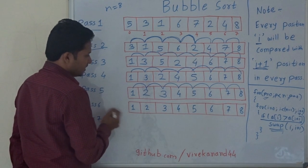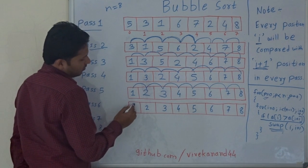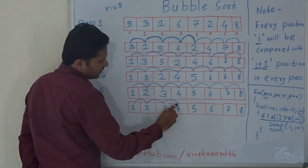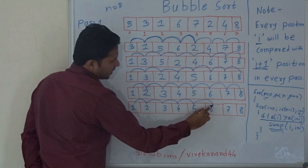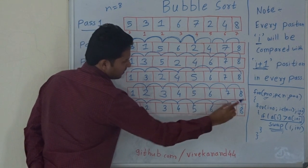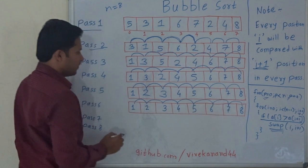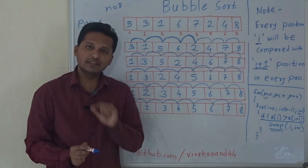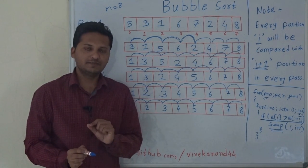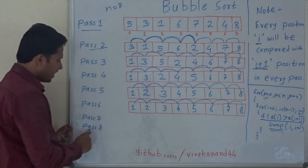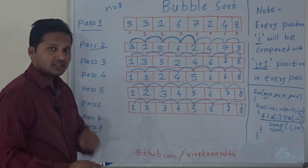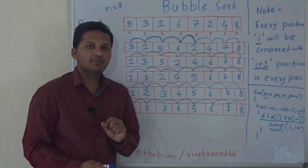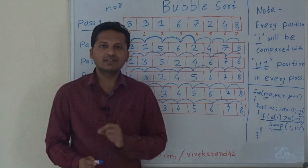Pass 6: compare all positions — 1 with 2, 2 with 3, 3 with 4, 4 with 5, 5 with 6, 6 with 7, 7 with 8 — no swap needed anywhere. This means the array is now sorted in increasing order. Pass 7 and Pass 8 will also be executed, but there will be no rearrangement because the array is already sorted.